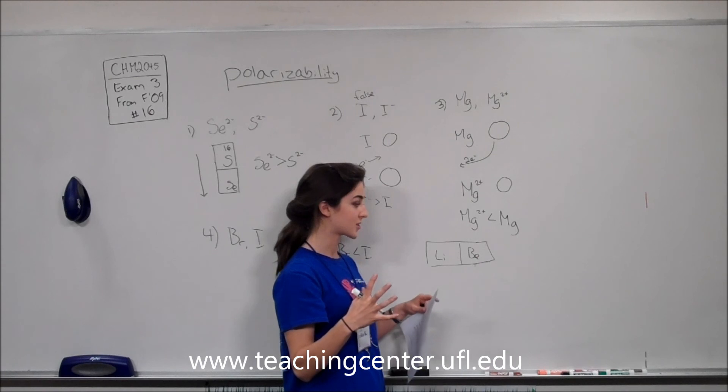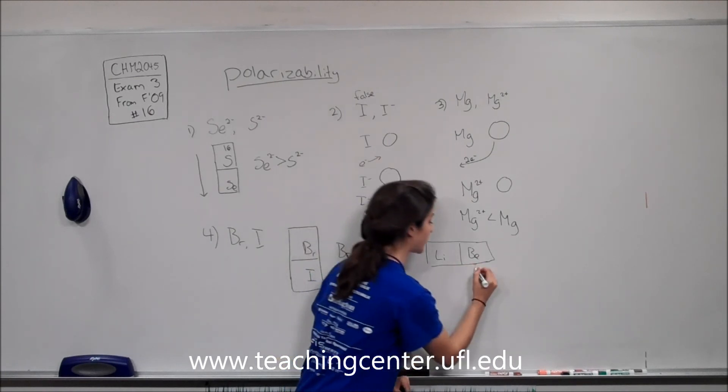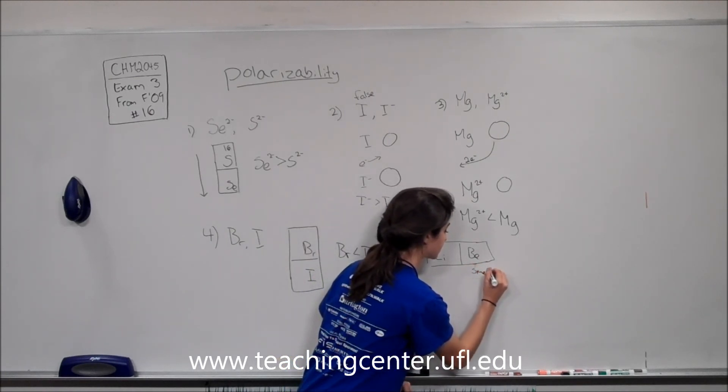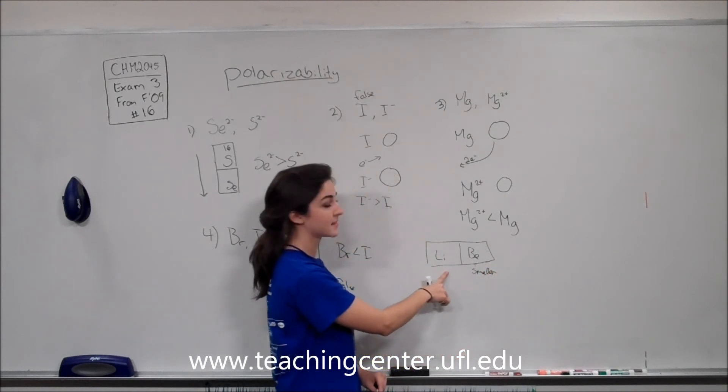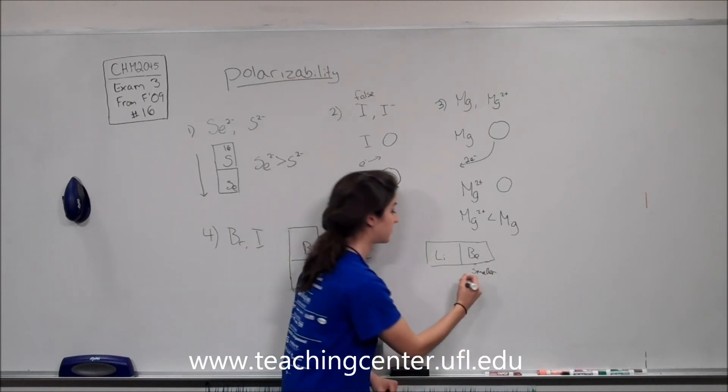So the electrons are going to be pulled tighter. So this is going to be smaller. That means lithium is going to be more polarizable than beryllium.